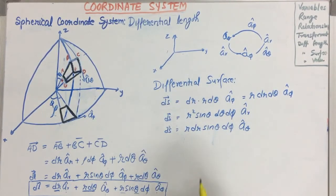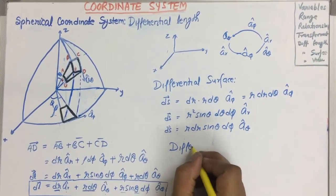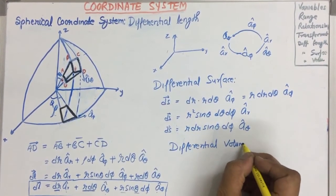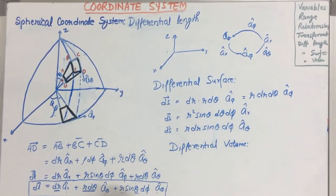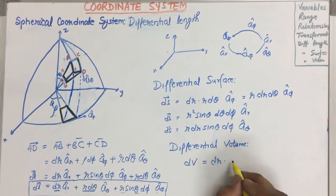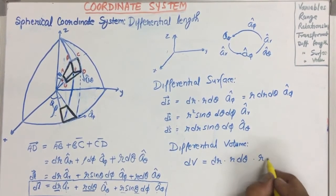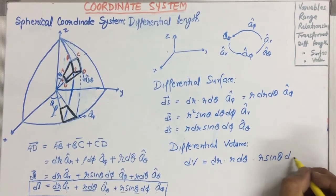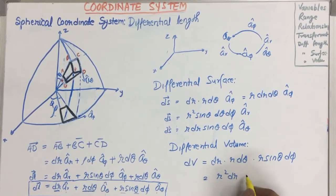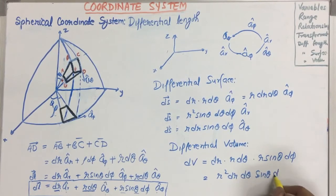Differential surface can be found out. Now differential volume is important. Differential volume can be the multiplication of all the coefficients in scalar form. So dV = dR · R·dθ · R·sinθ·dφ, which gives dV = R²·sinθ·dR·dθ·dφ. This is the differential volume.